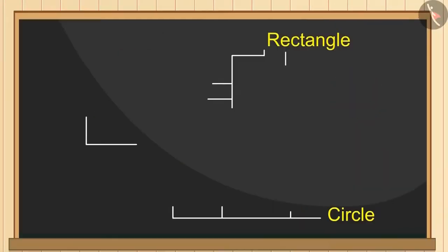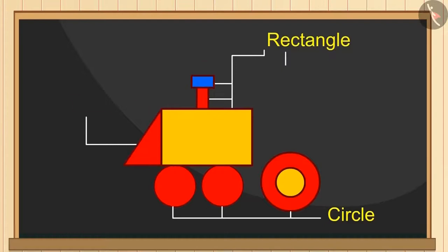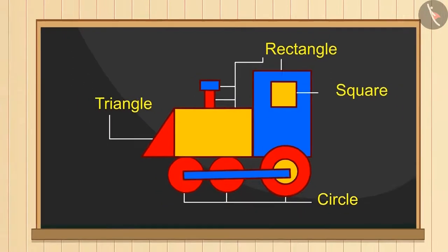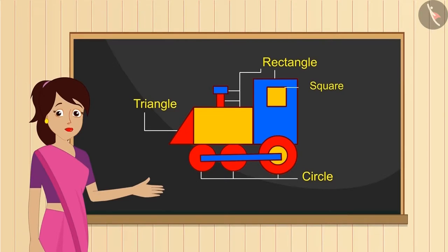See this, its wheels are like a circle and its chimney is made of two rectangles. Rectangle to draw the whole engine and one window in the shape of a square. So, how was it children?